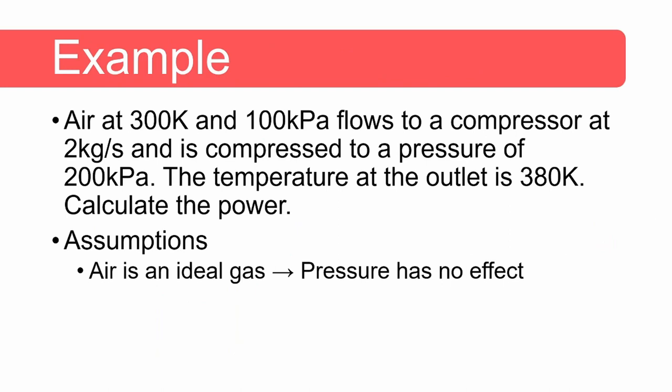Alright, let's do an example. The question states that air at 300 Kelvin and 100 kilopascal flows to a compressor at 2 kilograms per second and is compressed to a pressure of 200 kilopascal. The temperature at the outlet is 380 Kelvin and we need to calculate the power required by the compressor. We can make some assumptions by stating that air is an ideal gas in this case and enthalpy is independent of pressure.